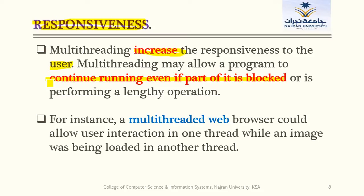So responsiveness is the first benefit: if you are using multi-threaded programming, the response to the user will be increased. This is very important whenever you are writing any program — your program must give a response to the user. Even if some part is blocked due to some reason, it must still give some response and not block the entire program.